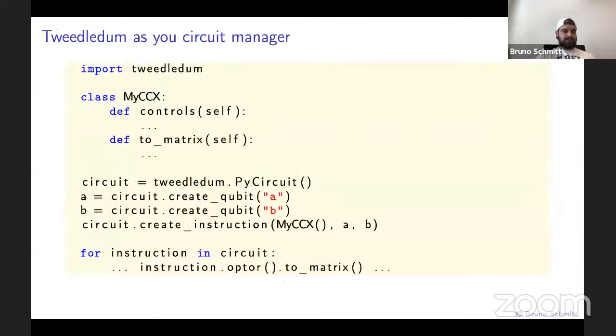Tweedledum can actually help with that. What I propose is that you should use Tweedledum as your circuit manager. Here is a code snippet that shows how to use Python classes as operators in Tweedledum. You have this MyCXX class that you define in Python. You instantiate it, and then you can create an instruction into a Tweedledum data structure by passing this class. And then at some point you can iterate over your circuit and get your Python object back. The only problem with this approach is that the classes and operators you're defining in Python will be opaque to your C++ code.